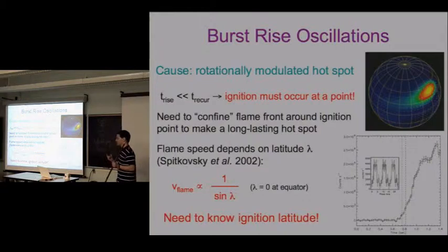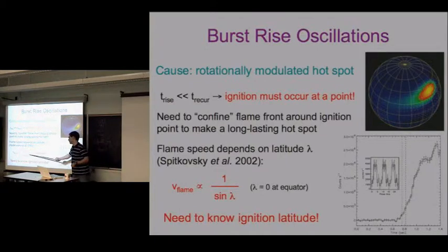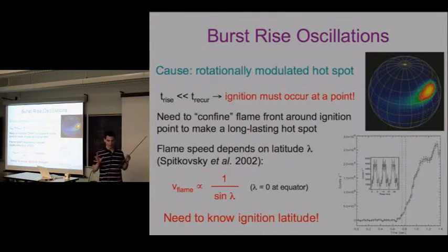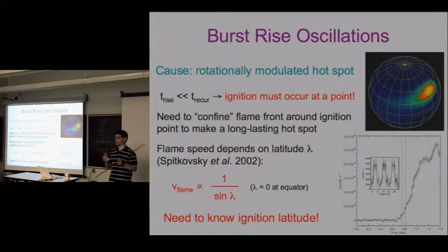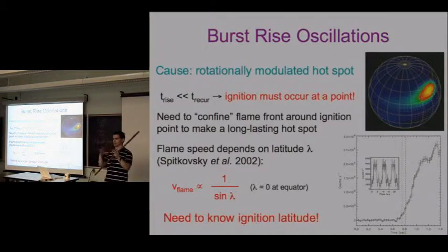By the work of Anatoly Spitkovsky, the flame speed is a function of latitude. The flame propagates very quickly at the equator because the Coriolis force is very small there and cannot confine the flame. But the flame speed is much slower near the poles, where the Coriolis force is greater and can actually confine the spot.